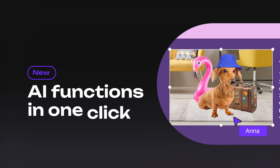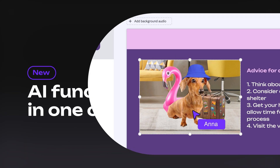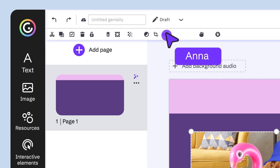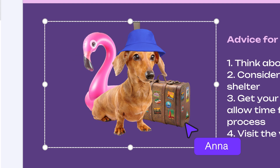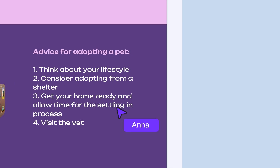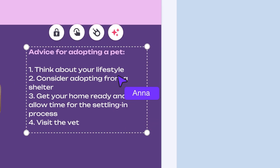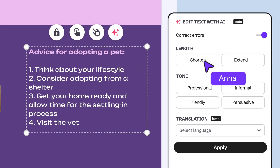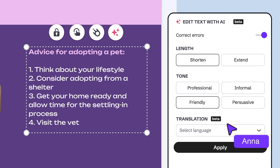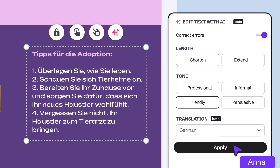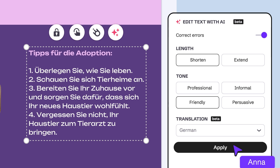Genially AI now lets you remove image backgrounds — no need for external tools. Correct errors in your texts, adjust the length, choose the right tone, and translate into over 100 languages in just one click, and without having to give instructions to the AI.